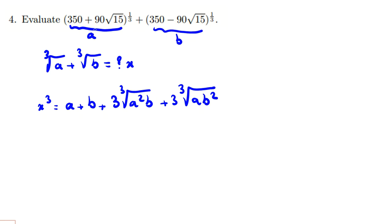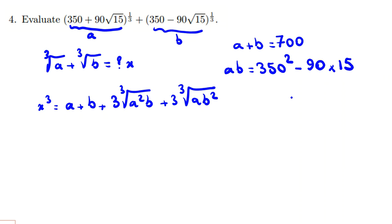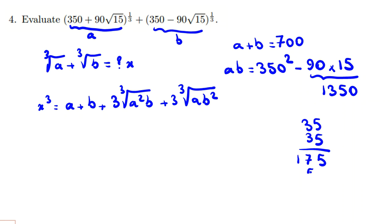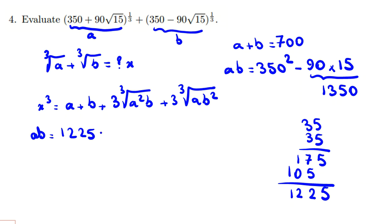Now, what can we say about a and b? There are similar terms. One thing we can say is a plus b equals 700. Another thing is that a times b equals 350 squared minus 90 times 15. Calculating this: 350 squared is 122,500, and we proceed with the arithmetic.